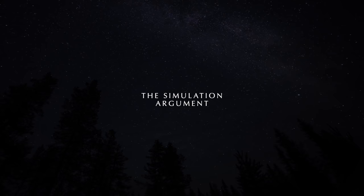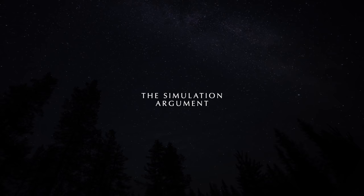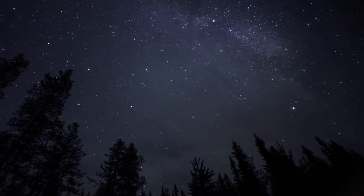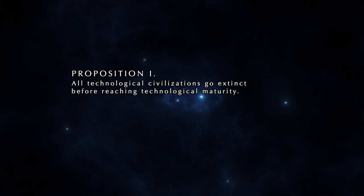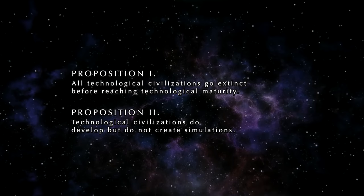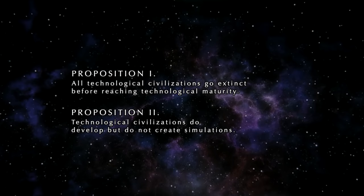The simulation argument. In his paper Bostrom lays out three propositions of which he argues at least one must be true. Proposition one is that all technological civilizations collapse or go extinct prior to reaching technological maturity. Proposition two is that civilizations can reach technological maturity but for some reason they never create the kind of simulations which could resemble our world.